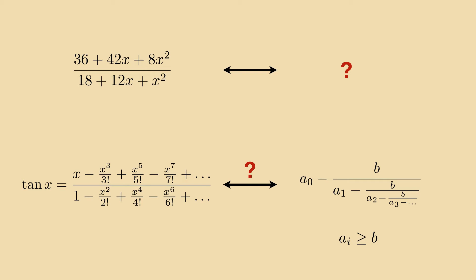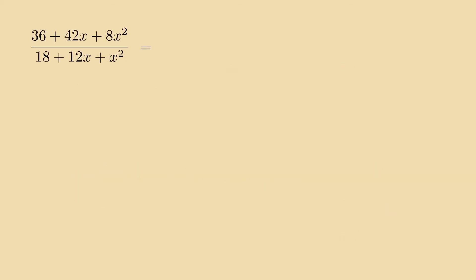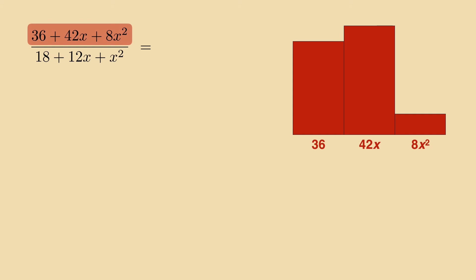When we convert this expression to a continued fraction, the geometric picture of cutting and swapping pieces will serve us as a guide. We represent the polynomial 36 plus 42x plus 8x squared with three columns. A first column for the constant term 36, another column of height 42 for the linear term 42x, and a third column of height 8 that stands for the quadratic term 8x squared.